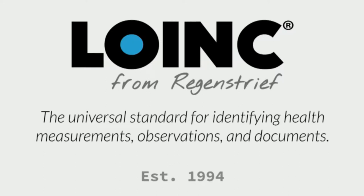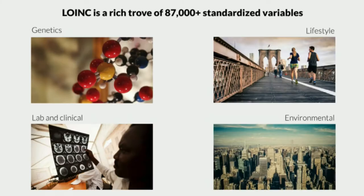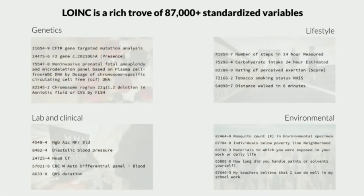LOINC is a universal standard for identifying health measurements, observations, and collections of those in the form of documents or panels. Today, the vocabulary has a rich trove of more than 87,000 different variables that really span the whole spectrum of kinds of observations you'll see in healthcare — all the way from genetic data at one end, all the way up to environmental data about a patient's lifestyle, their behavior, and the situations in which they live and work.